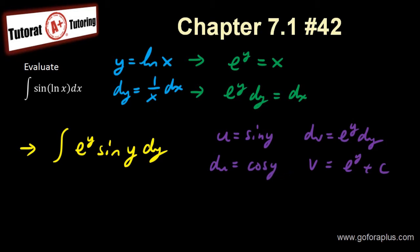So I know that v is equal to e to the y plus c. And my du is equal to cosine of y. So now my formula is uv minus integral of vdu.